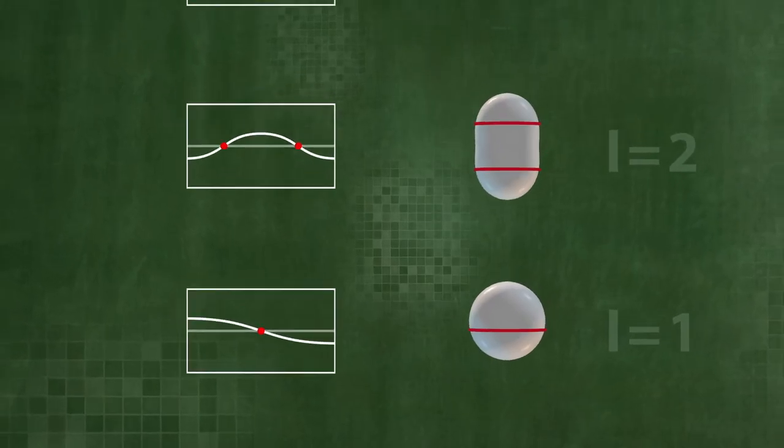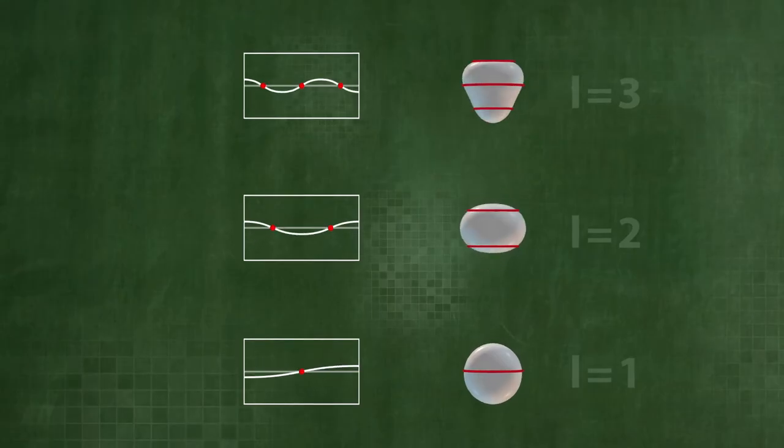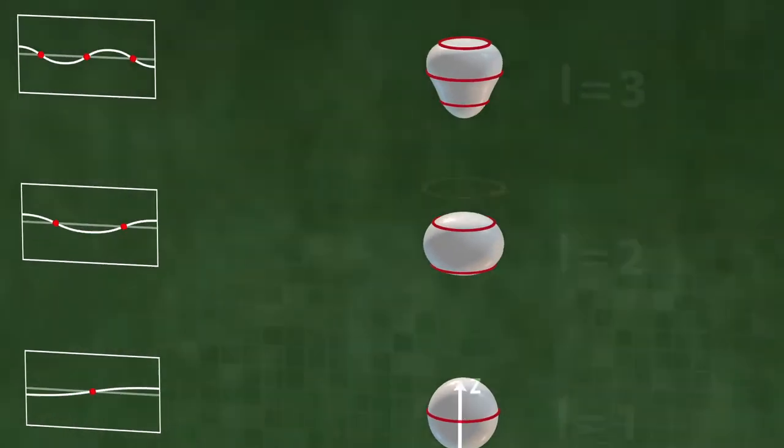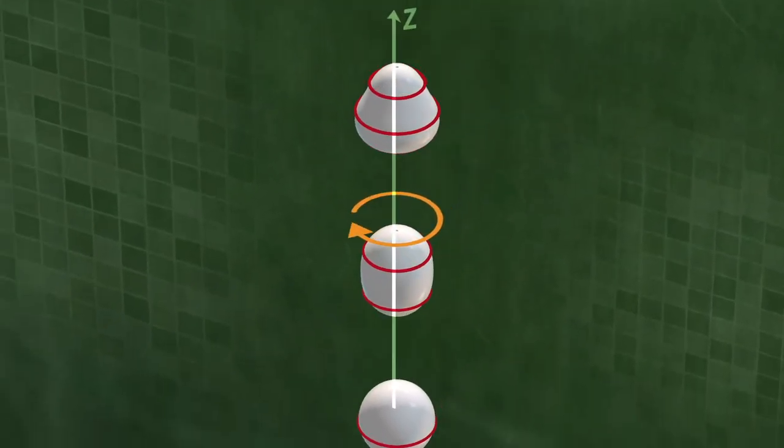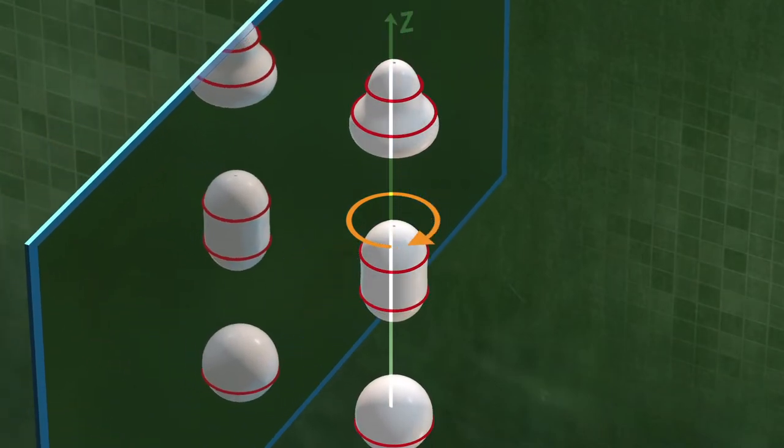We can repeat this on and on. Bending and rotating the vibration with L nodes results in a vibrating sphere with L nodal lines. By definition, these sphere vibrations are rotationally symmetric. They are also their own reflection.